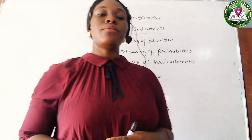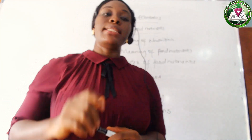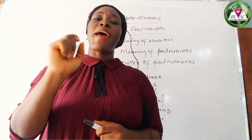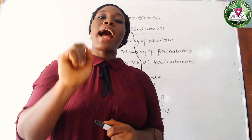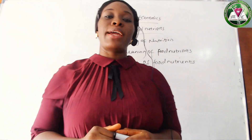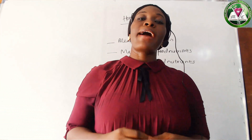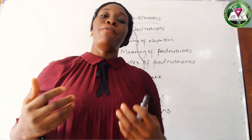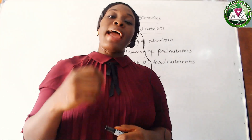What are food nutrients? Food nutrients are those chemical substances that are present in the food we eat — for instance, your rice, your beans. The first nutrient we have is carbohydrates. Carbohydrate is an energy giving food, and one of the functions of carbohydrate is that it gives us energy.